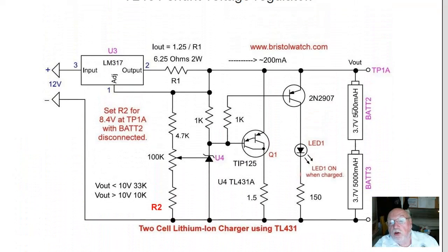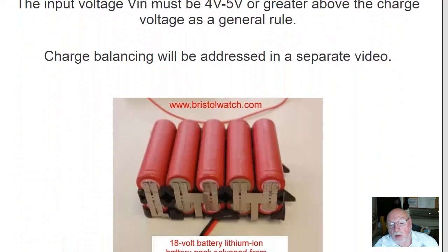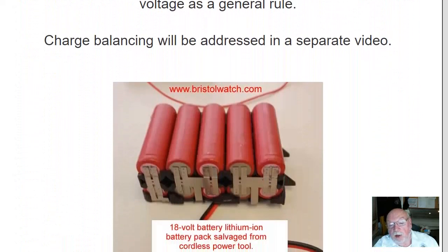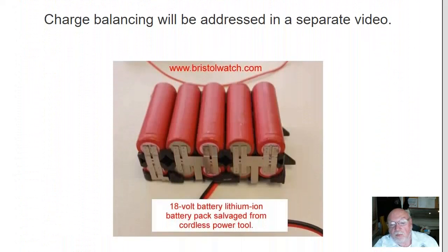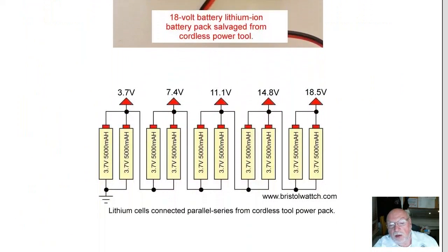When you're charging batteries or cells, your input voltage must be three, four, five volts higher than the charge voltage minimum. Remember that issue. Here's an example battery pack that I salvaged out of a cordless power tool. Here is the schematic to that battery pack and with this background, how do I charge this? Do I need to come up with at least 19 volts to charge this battery pack?